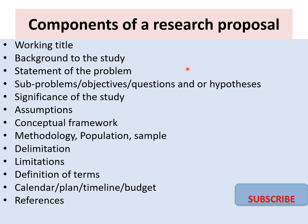The main components of a research proposal include a working title, the background of the study, a statement of the problem, subproblems, objectives, questions or hypotheses, the significance of the study, assumptions, the conceptual framework, the methodology — which includes the population and sample — the delimitations, the definition of terms, and the references.